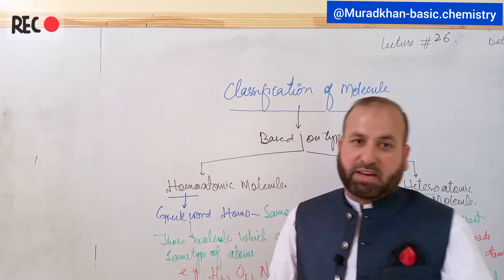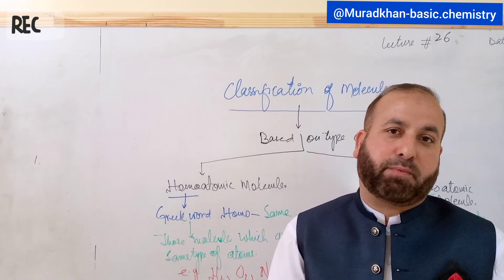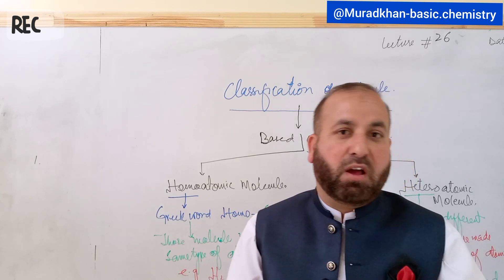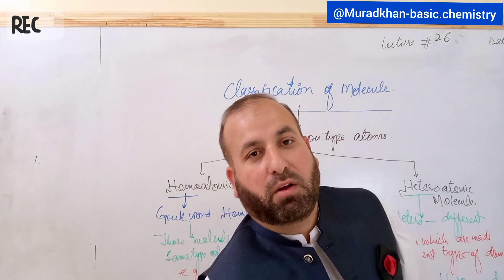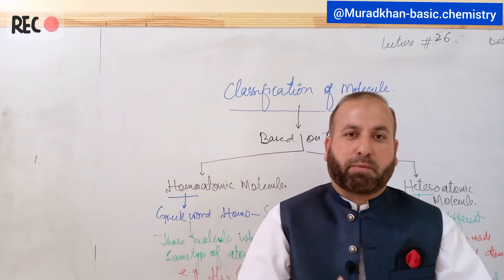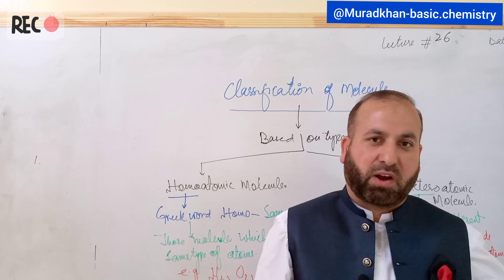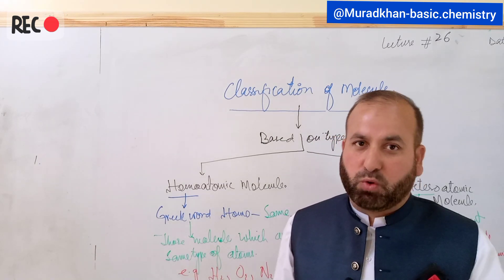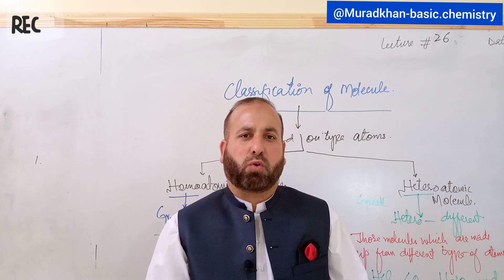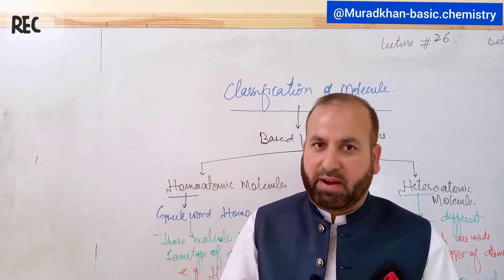In summary, classification based on type of atom divides molecules into two types: homoatomic, also called homonuclear molecules, which are made up from the same type of atom; and heteroatomic molecules, also known as heteronuclear molecules, because they are made up from different types of atoms.